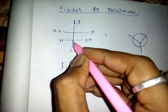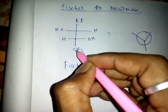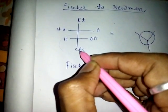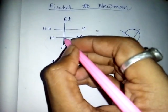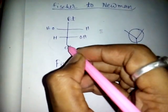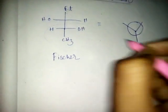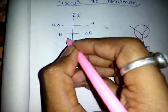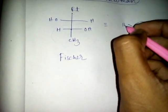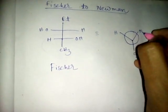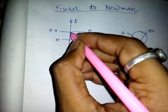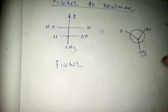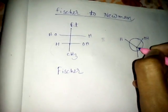Now we see that for this group here, CH3 is in front of it. Now we write this CH3. This is the carbon, and this CH3 — in the left side of CH3 here is H, and the right side of CH3 is OH.